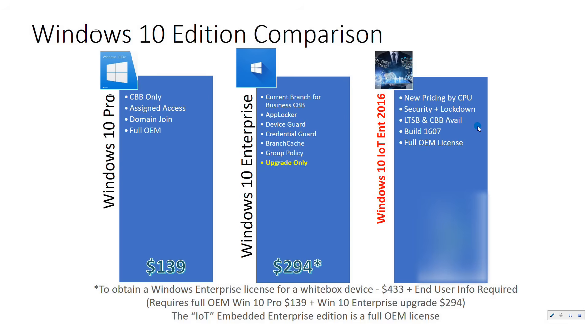You're going to want the long-term service branch, so you're not going to want to go with Pro. The IoT Enterprise LTSB edition is the one you want.